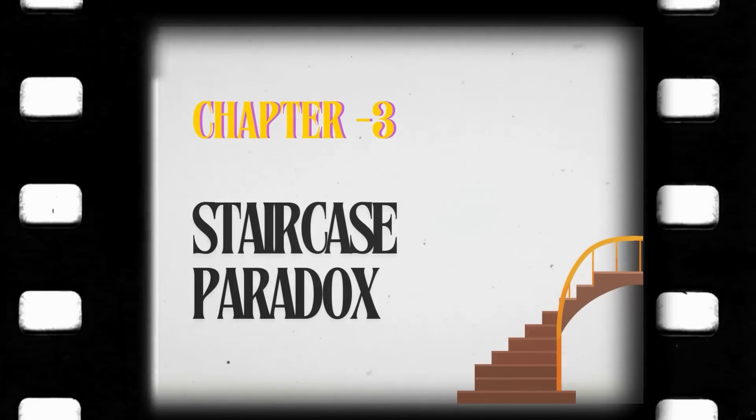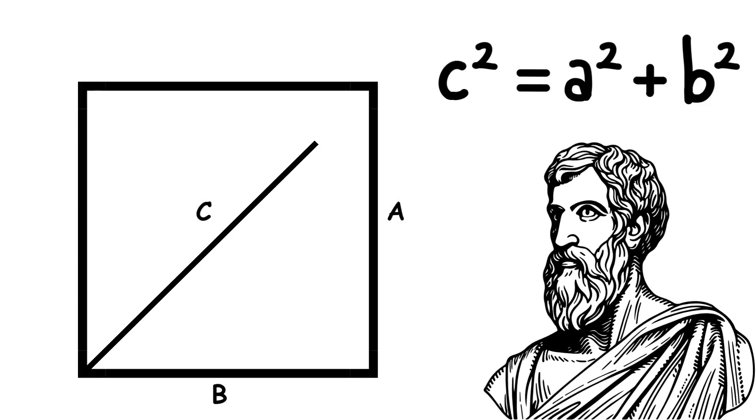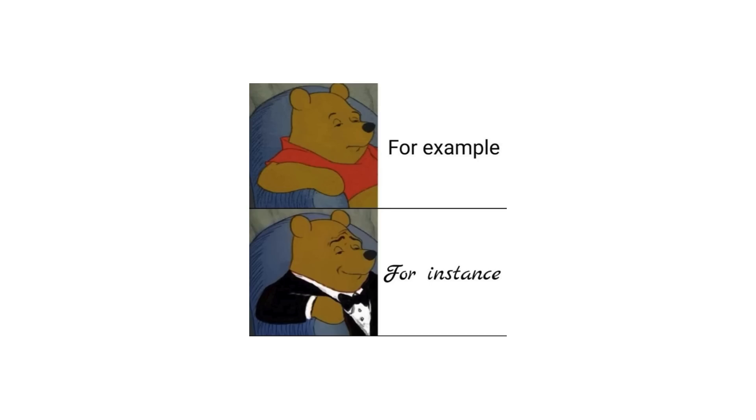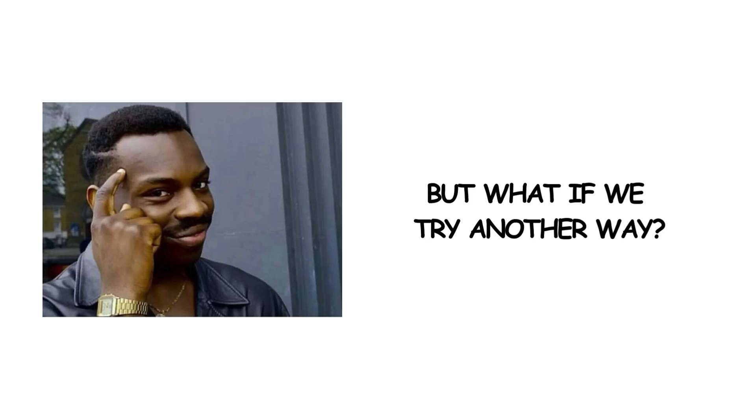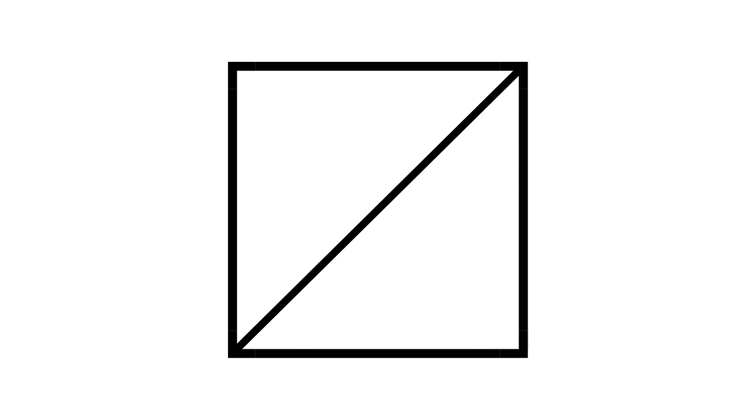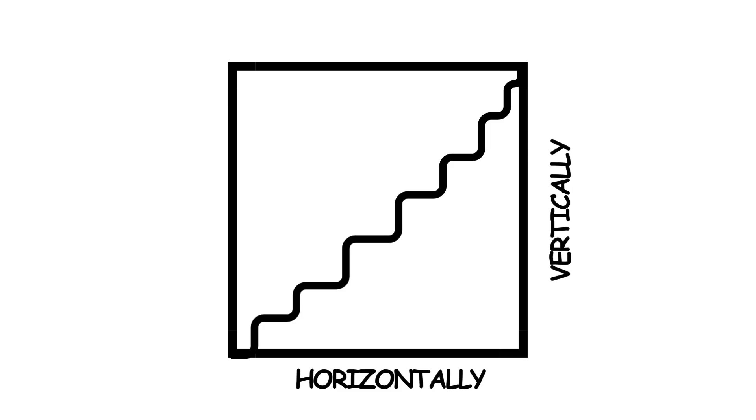Staircase Paradox. Given a square's side length, its diagonal length can be calculated using the Pythagorean theorem. For instance, a side length of 1 gives a diagonal length of square root of 2, about 1.414. But what if we try another way? Approximate the diagonal using a zigzagging staircase pattern, alternating between going horizontally and vertically. The total length of the horizontal portions is 1, and the total length of the vertical portions is also 1. So,